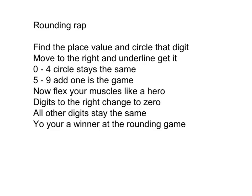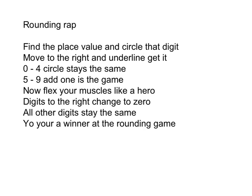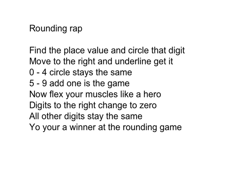Here's the rounding wrap. First, you find the place value and circle that digit — you're finding the place value you're rounding to and circling that digit. For instance, if it says to round to the tens place, you find that tens place and circle it. Next, it says move to the right and underline it. So if we were asked to round a number like 832 to the nearest tens place, we would circle the 3 and underline the 2.